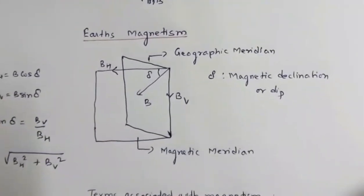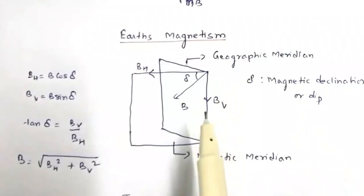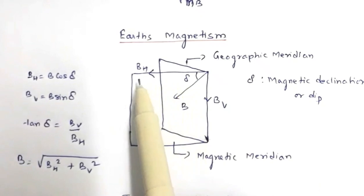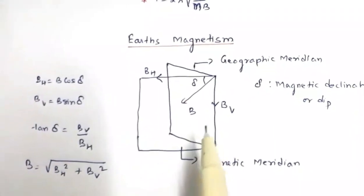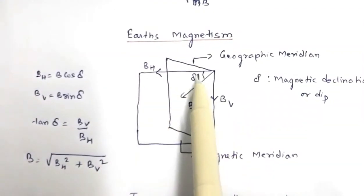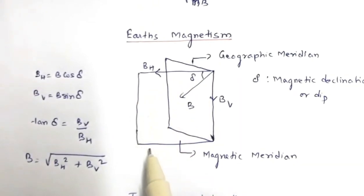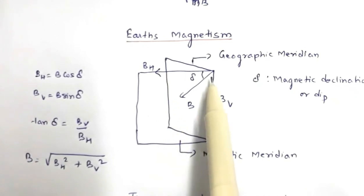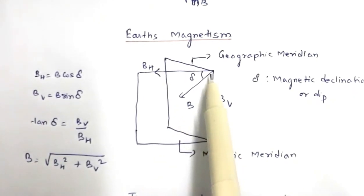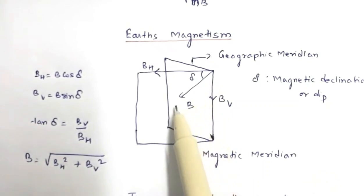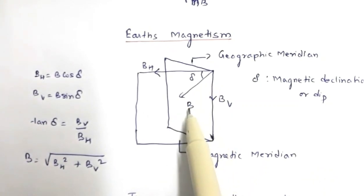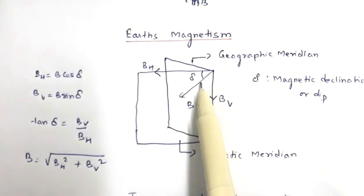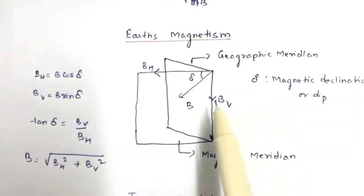The second part of this chapter is about Earth's magnetism. This diagram helps in understanding Earth's magnetism. There are two planes: the vertical plane is the magnetic meridian and the other plane is the geographic meridian. The resultant field of the Earth lies in the magnetic meridian, shown as B, and the angle made by this resultant field with the horizontal direction is called magnetic declination.